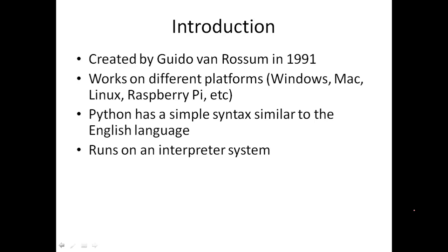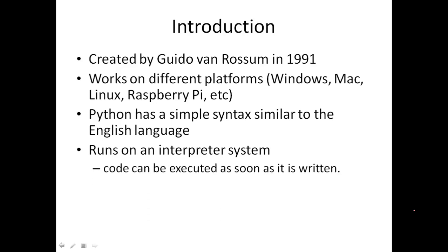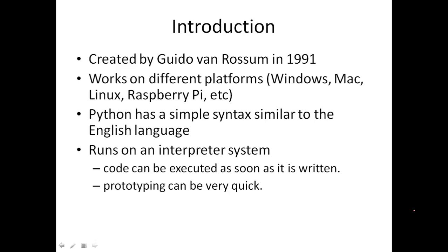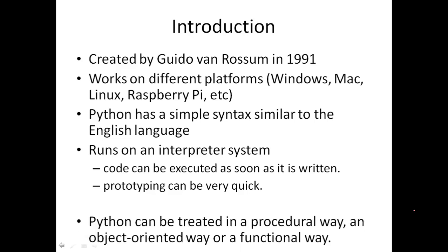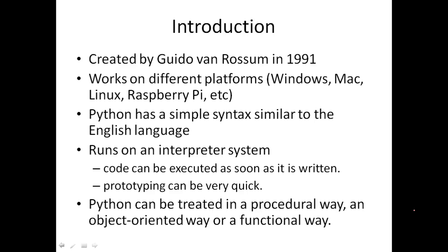Python uses an interpreter system, so there is line-by-line translation. If there is some error in a particular line, the Python interpreter will stop execution there. Code can be executed as soon as it is written, so the advantage is we can do prototyping very quickly — you can write some code and check whether it is working or not.